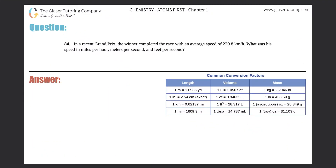Number 84. In a recent Grand Prix, the winner completed the race with an average speed of 229.8 kilometers per hour. What is his speed in miles per hour, meters per second, and feet per second?